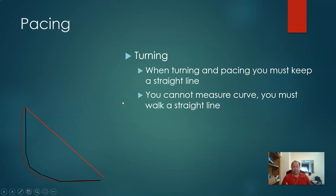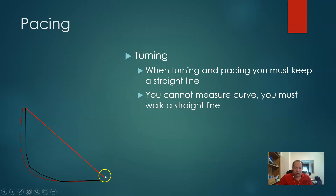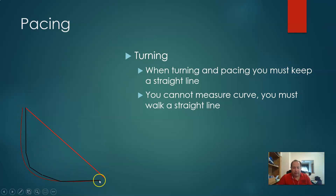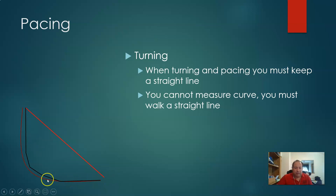One important thing with turning is that when you're pacing, if you've got to turn, you have to walk a straight line. You can't measure a curve — you must walk a straight line. A nice bend would look curved, but if I'm pacing it, I've got to go straight. So I can pace around corners, but I can't make arcs when I pace. I've got to go straight, turn a little, go straight, turn a little — and so on — to be able to accurately measure that curve.